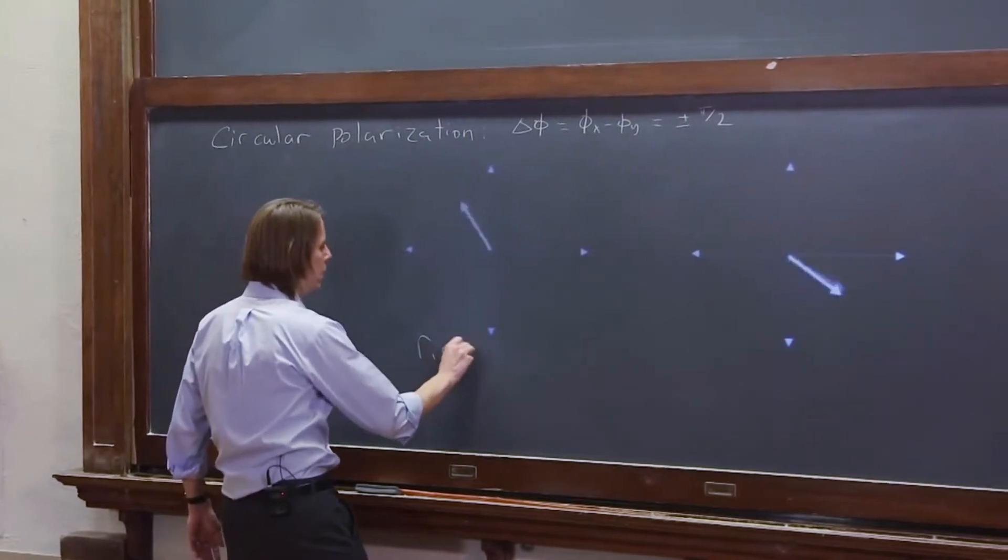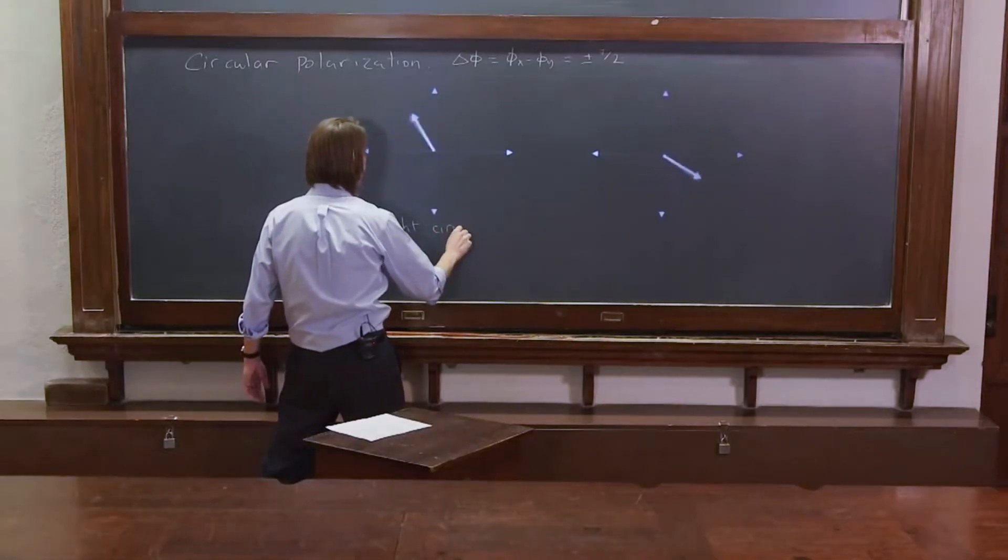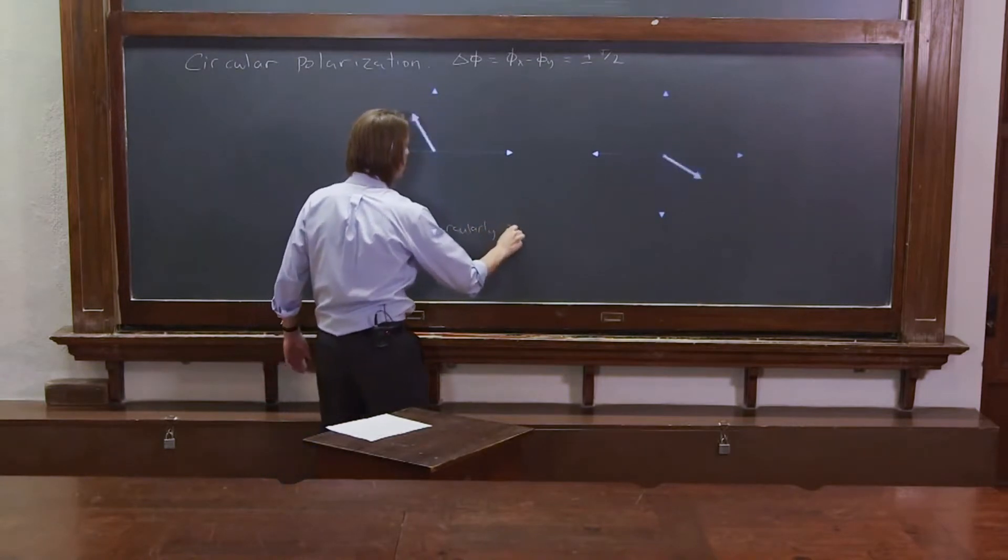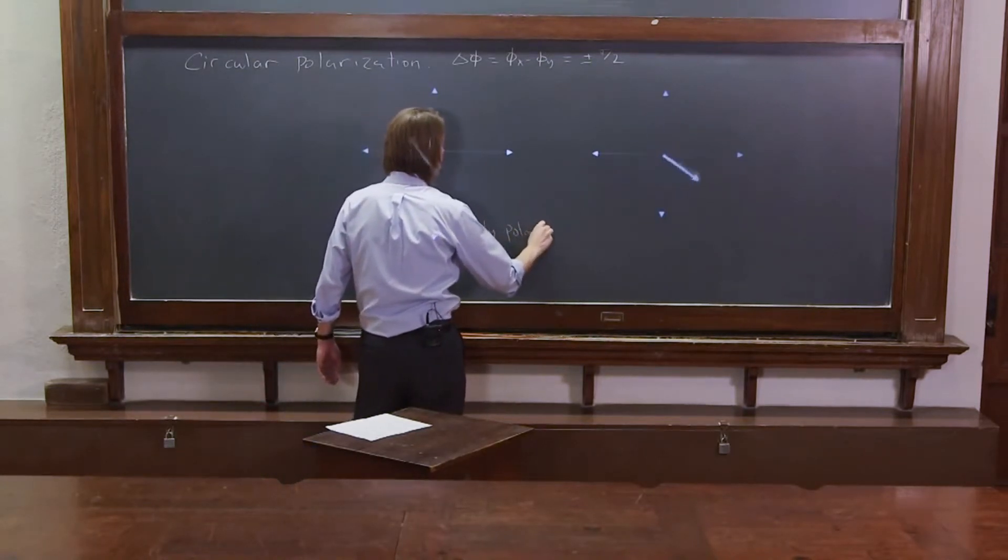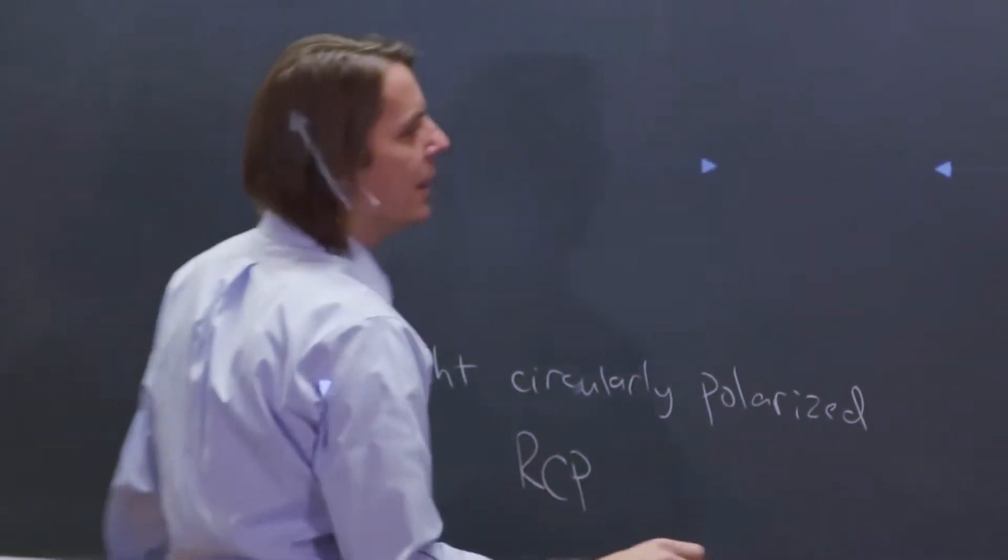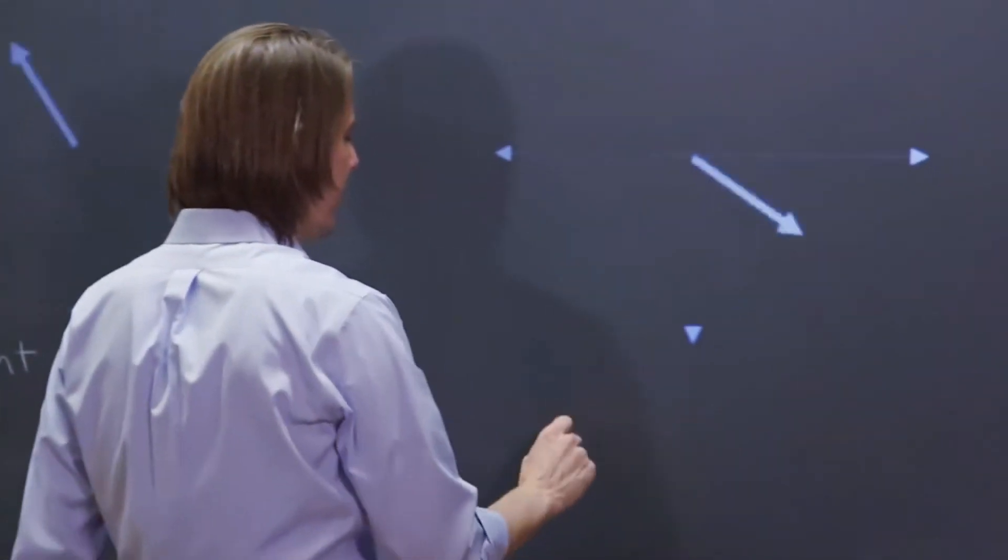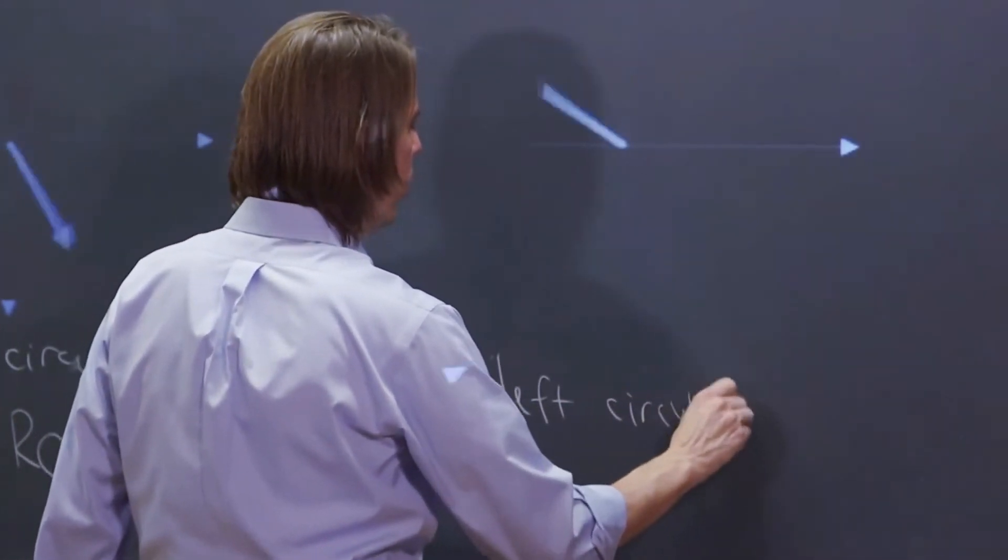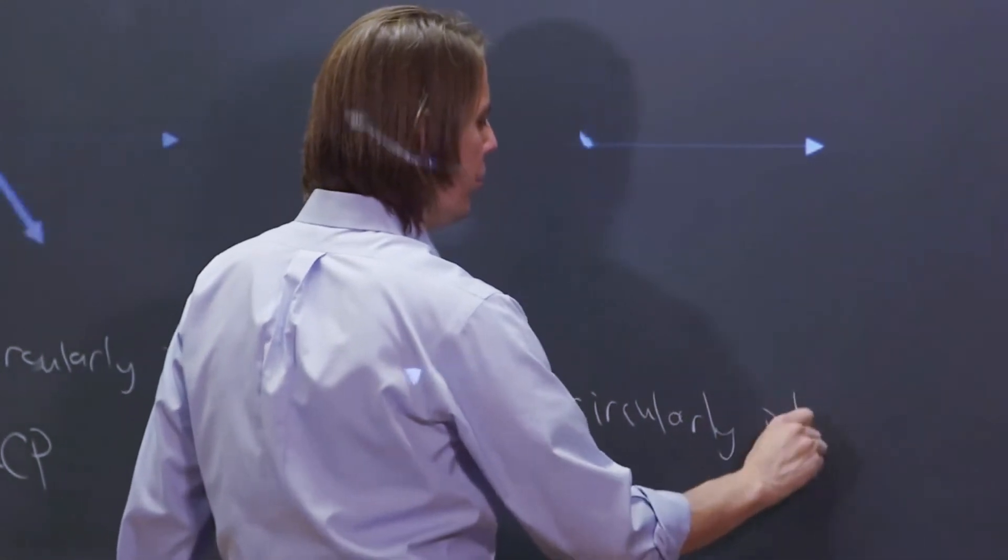This is right circular light, circularly polarized, or the much simpler RCP. And this one, going counterclockwise, is left circularly polarized.